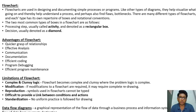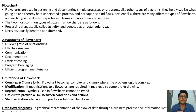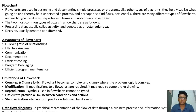The two common types of boxes in flowcharts are: a rectangular box, which represents an activity or processing step, and a diamond, which represents a decision. The advantages of a flowchart include effective analysis, communication, full documentation, efficient coding, quicker grasp of relationships, program debugging, and efficient program maintenance.